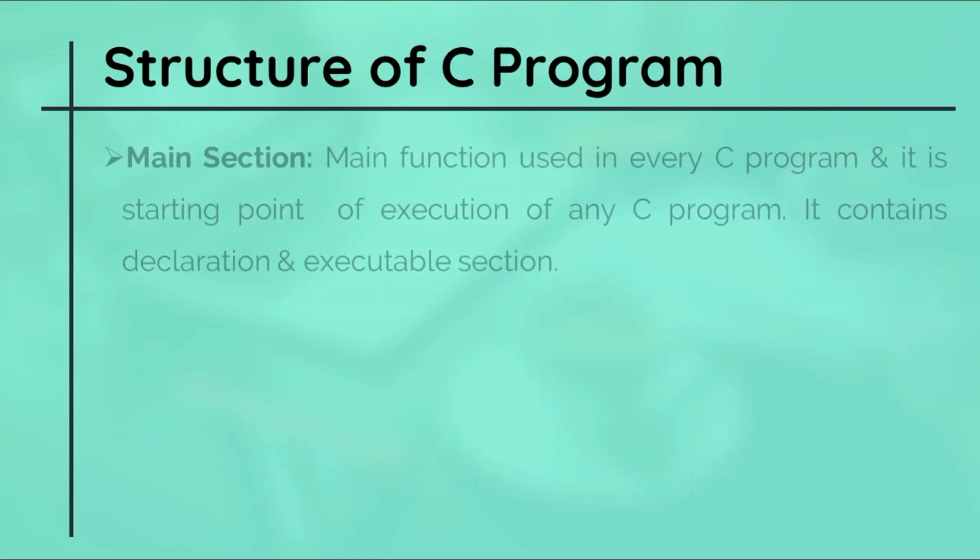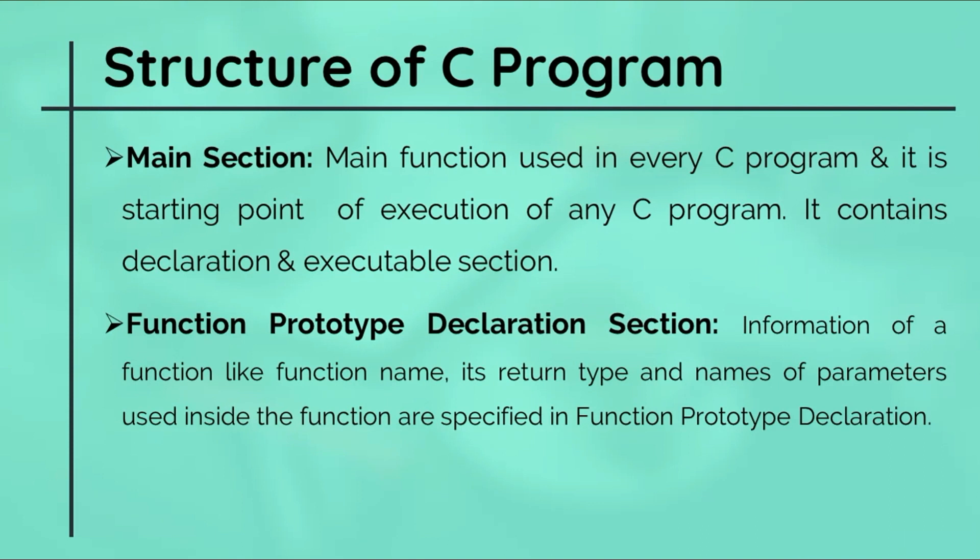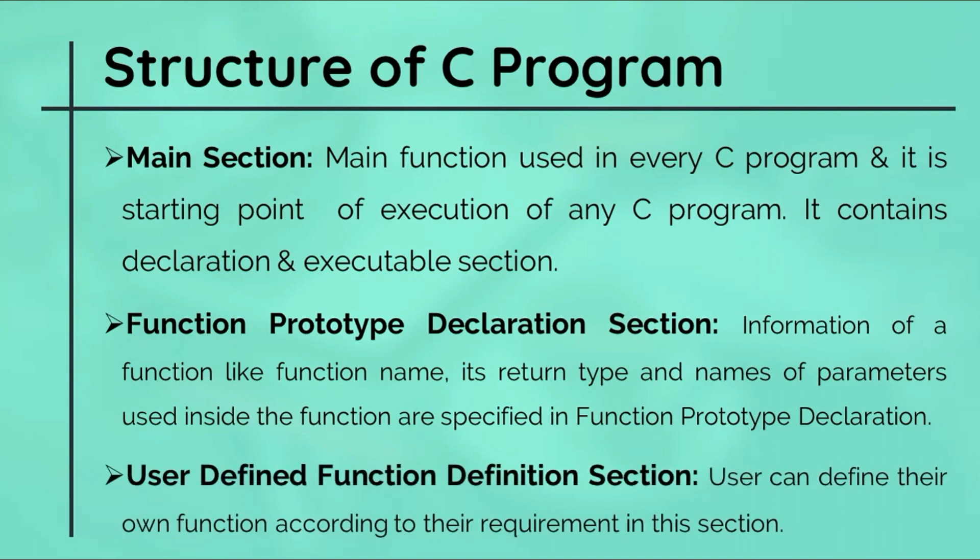The next one is the main function. Main function is used in every C program and it is the starting point of execution of any C program. It contains the declaration and executable section. The next one is function prototype declaration section. Information of a function like function name, its return type, and names of parameters used inside the function are specified in the function prototype declaration. And last, the user-defined function definition section. Users can define their own functions according to their requirements in this section. Do not worry about the function prototype declaration and user-defined section. We will study about this in details when we cover the topic of functions in C.